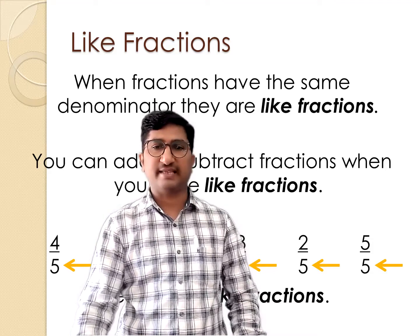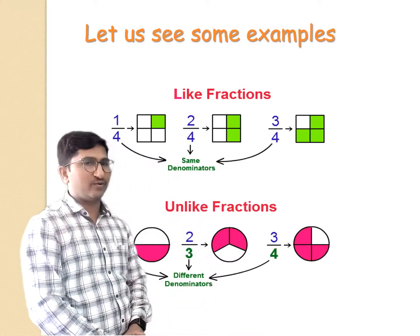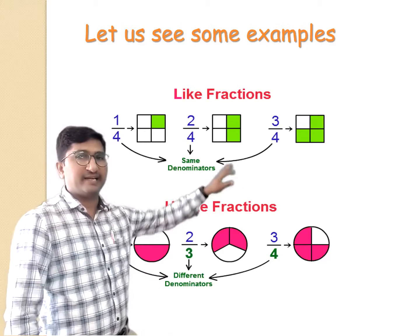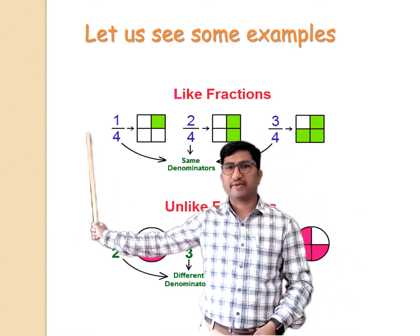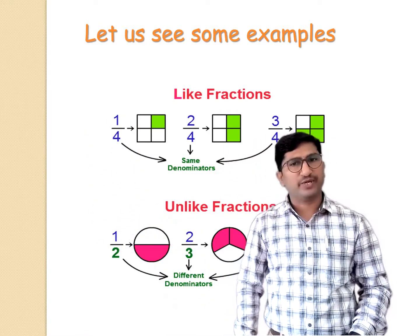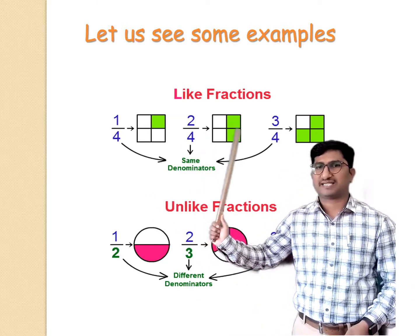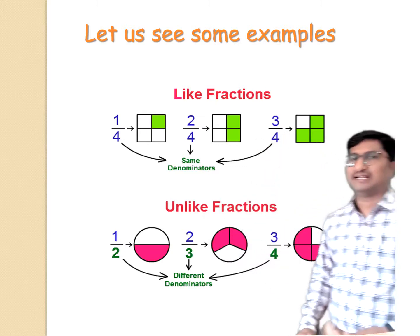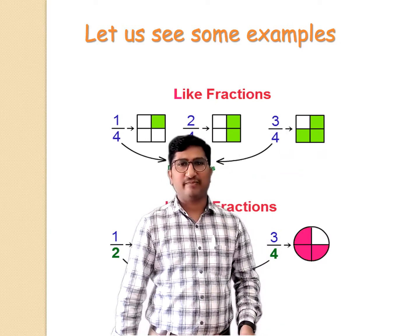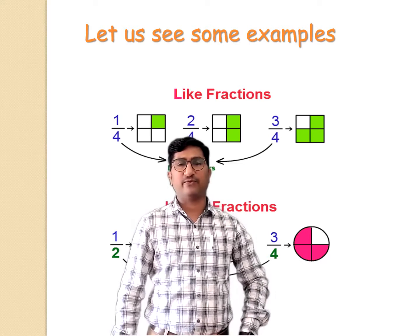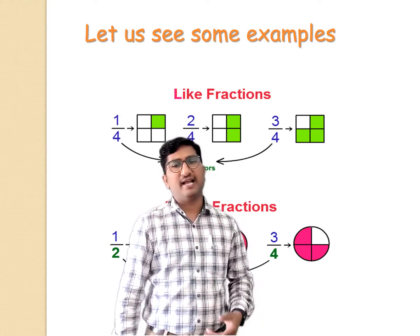Let us see the comparison of fractions by some examples. Here you can easily observe that the first fraction is 1 upon 4 — 1 part is shaded out of 4 equal parts. In the second figure, 2 parts are shaded out of 4 parts, and in the third figure, 3 parts are shaded out of 4 equal parts. As the denominator is the same, the total number of equal parts is the same — 4, 4, 4 — so you can easily compare the fractions and tell which is smaller and which is bigger.